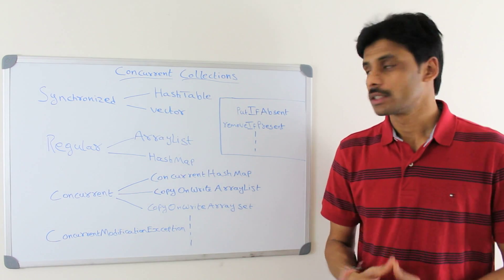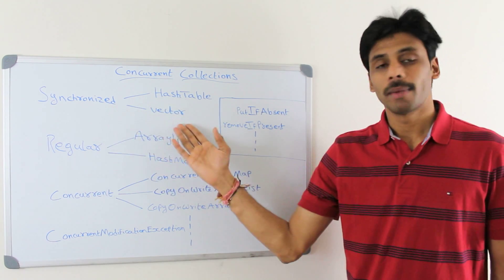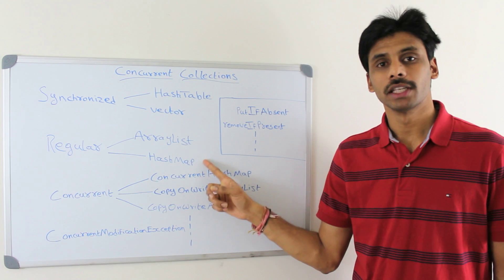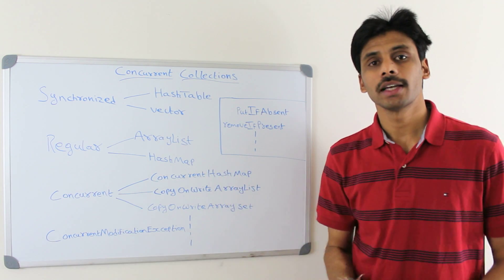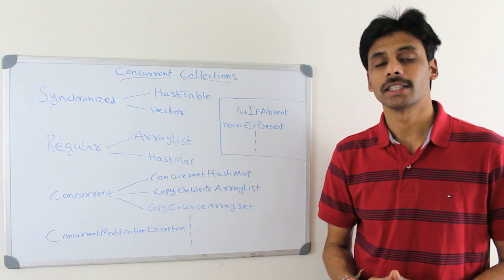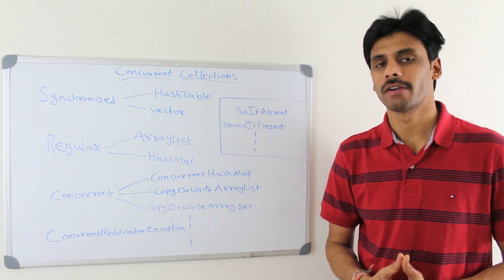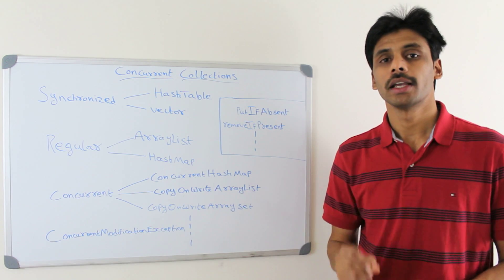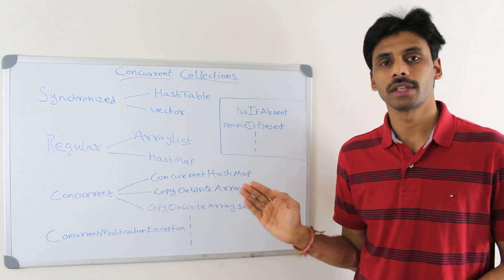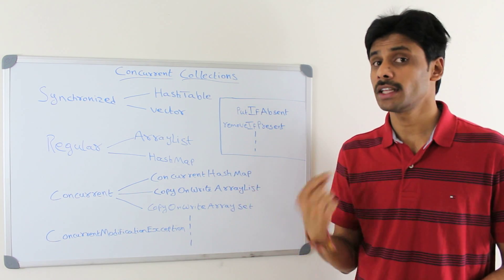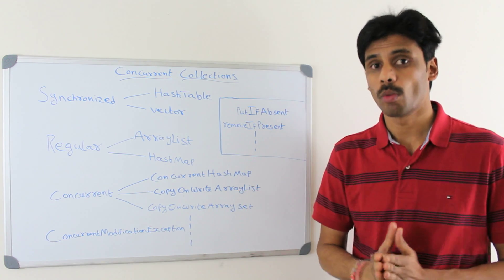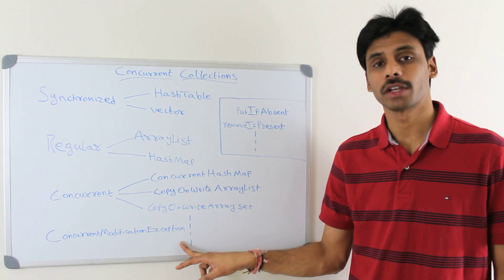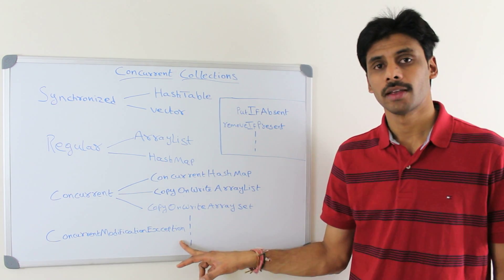Both these collection types can be synchronized — the synchronized ones are by default synchronized, and we can get a synchronized version of the regular ones by using the utility methods in the Collections class under java.util package. So even when one thread is accessing one of these collections and another thread tries to modify it, we get a ConcurrentModificationException.